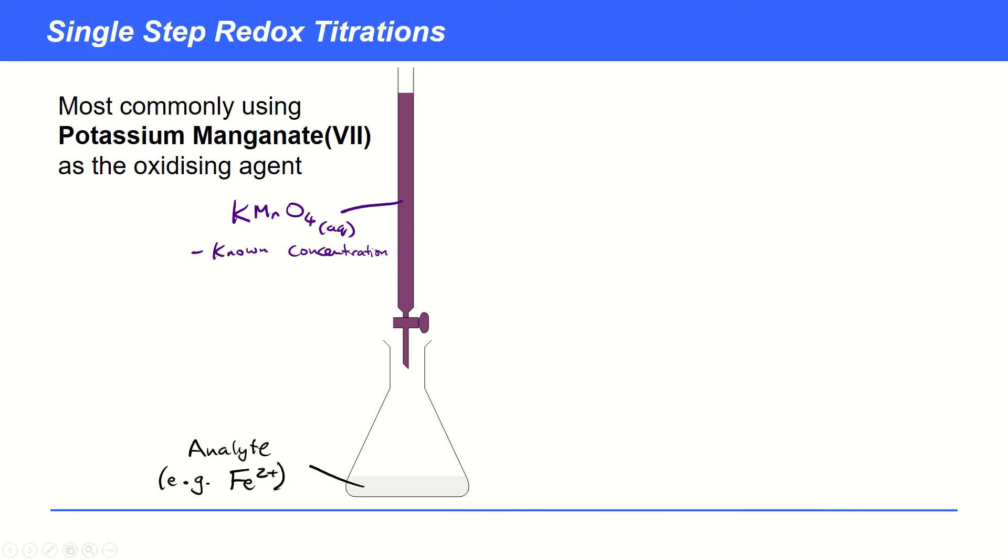And the reason this is called a single step redox titration is that the properties of the analyte, say the concentration of Fe2+, is going to be calculated purely from the number of moles of manganate that's been used in the reaction with Fe2+. So there's only one chemical reaction going on here. It's the reaction between the manganate in the burette and the Fe2+, in the analyte.